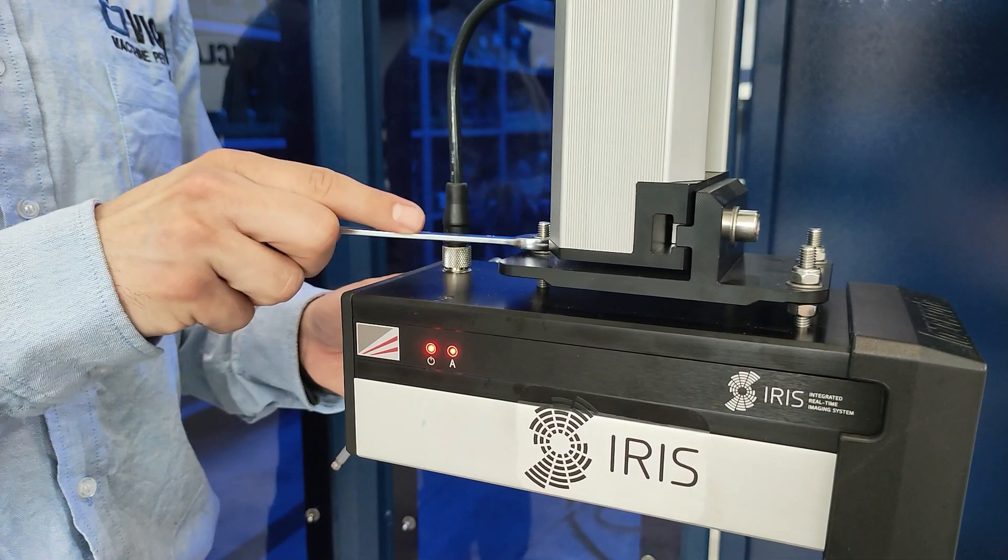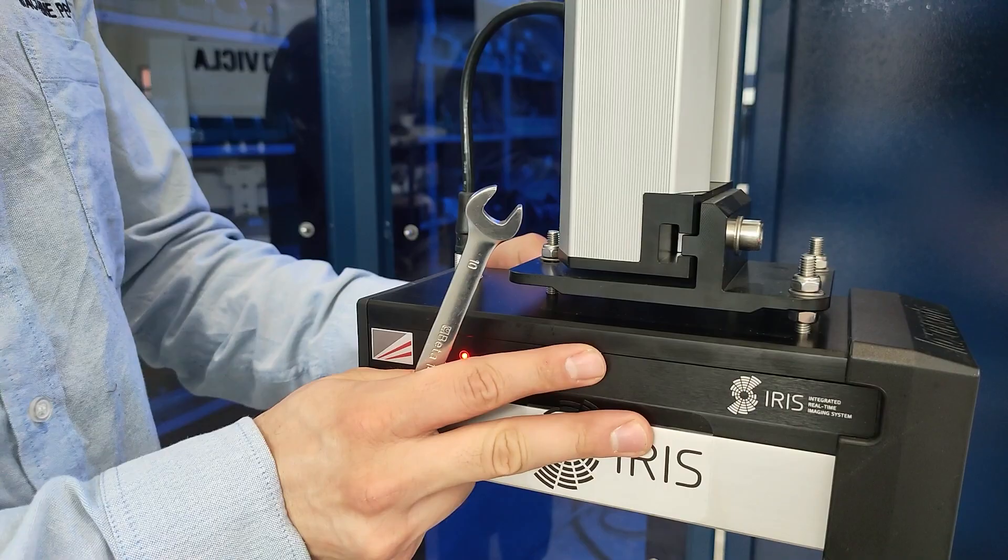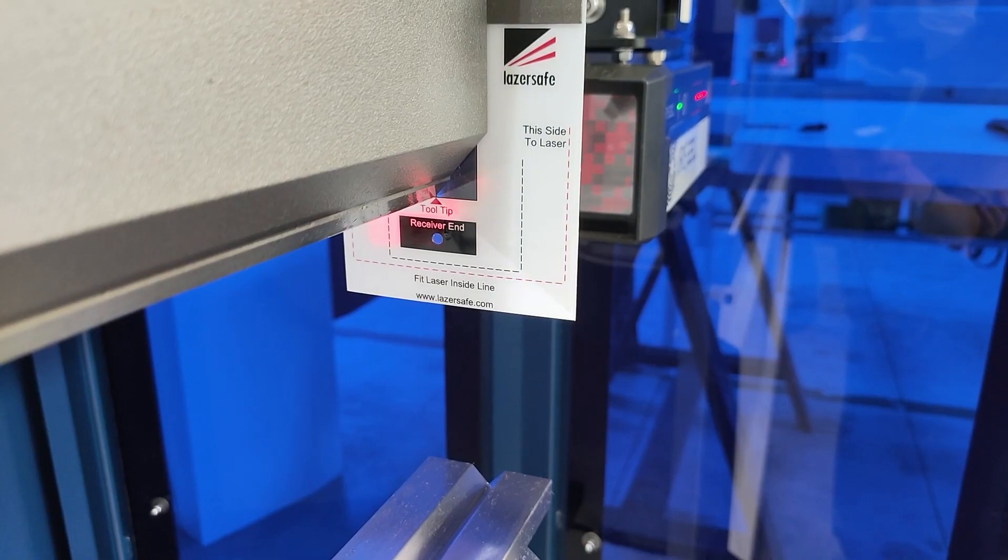Use a 10 millimeter wrench to further adjust the position of the laser transmitter until the laser beam centers perfectly in the black rectangle displayed on the RX alignment magnet.